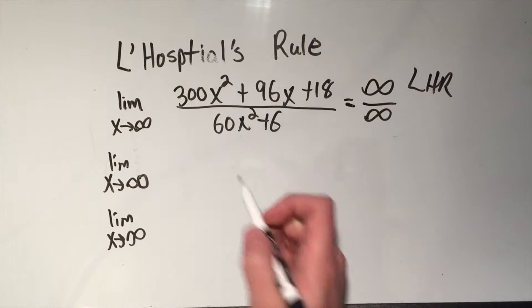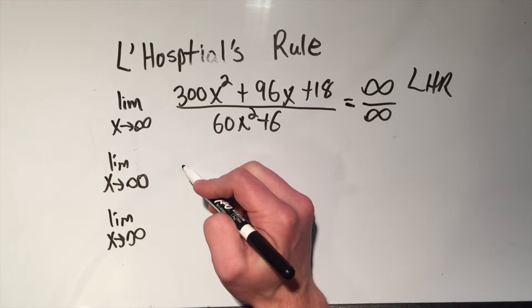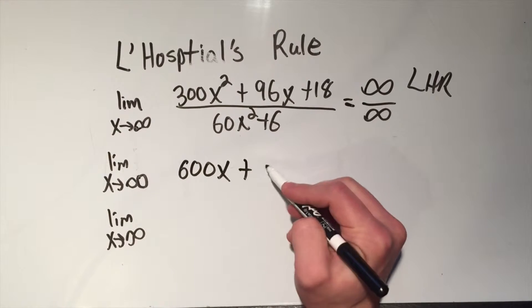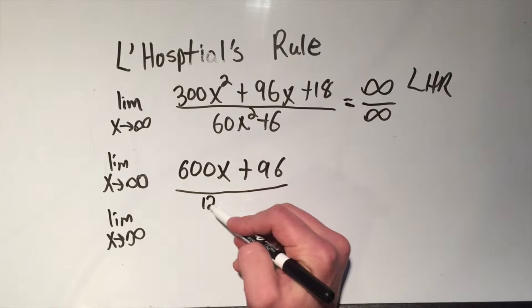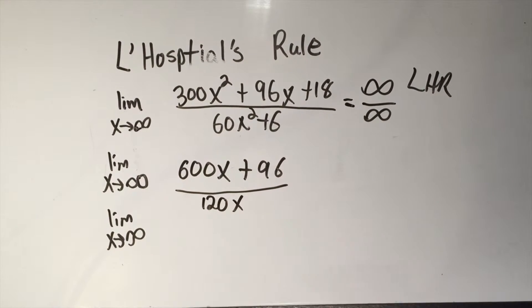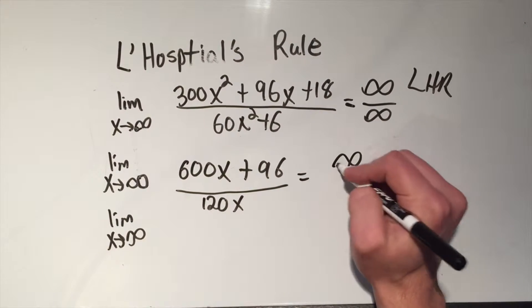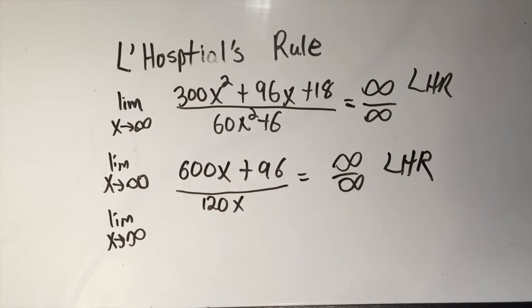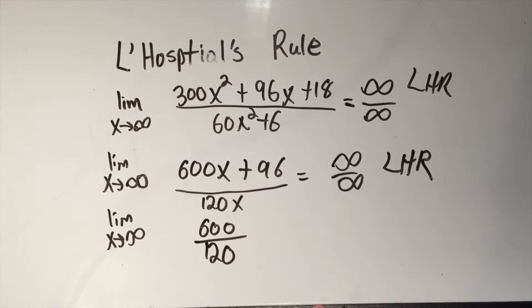And we're almost getting there. I'll do the derivative of the numerator separately from the derivative of the denominator. It's not a quotient rule, guys. It's something completely different. But you can see the terms have been dropping out this whole time. 600x plus 96 over 60 times 2 is 120x. And if I take the limit again, I'm still getting infinity over infinity one more time. I know you can do it. L'Hospital's rule. The derivative of the numerator is 600. The derivative of the denominator is 120.